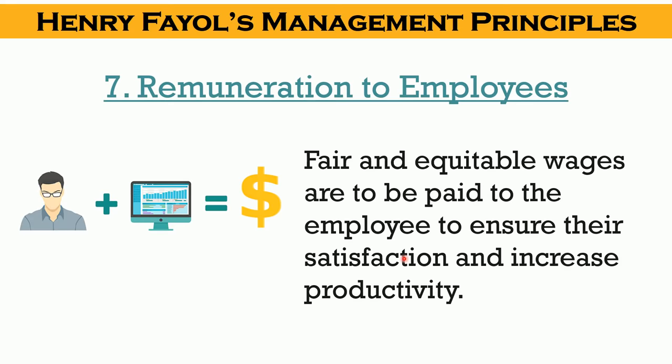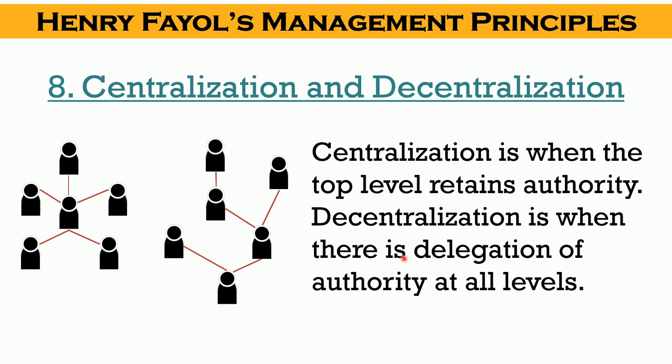The next principle is centralization and decentralization. There must be a proper balance between centralization and decentralization according to Fayol. Centralization refers to a system where top-level management retains all the authority. On the other hand, decentralization is a system in which there is delegation of authority at all levels of management. Fayol emphasized that an organization should be partly centralized and partly decentralized.